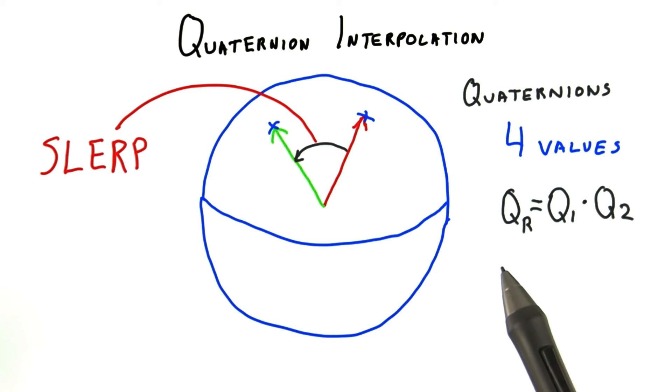Quaternions make it easy to specify and interpolate between various orientations. Similar to rotation matrices but with fewer values involved, you can also multiply quaternions together. Doing so produces a new quaternion that is a result of this series of rotations.